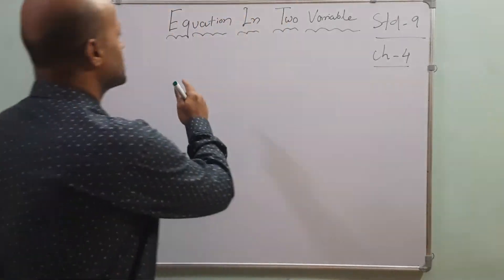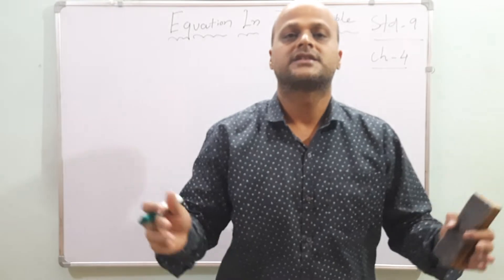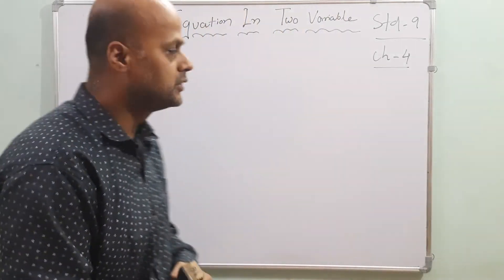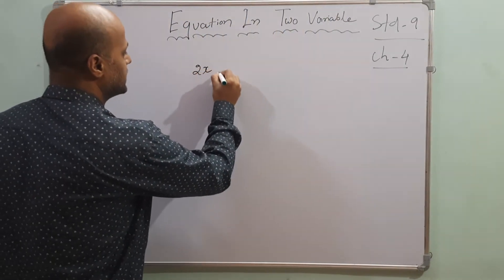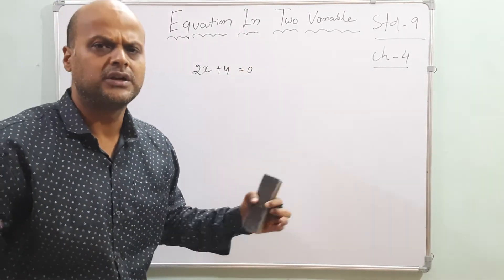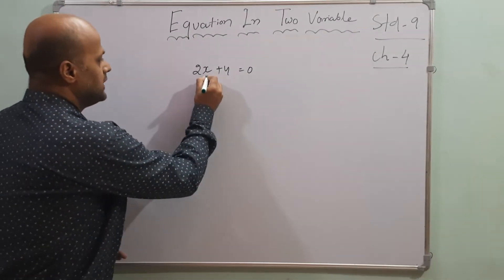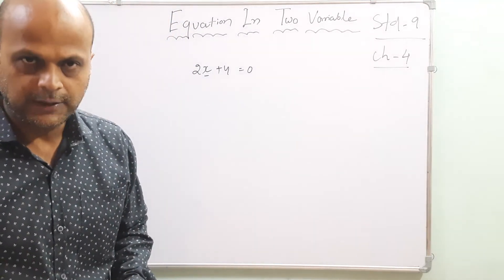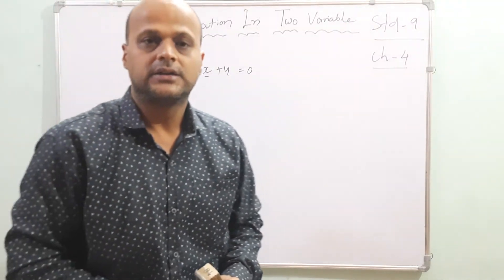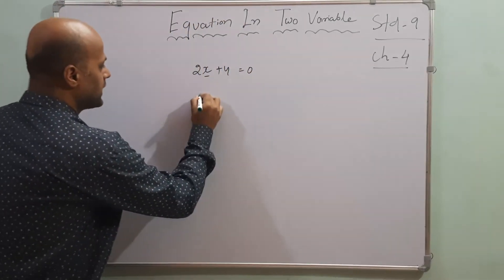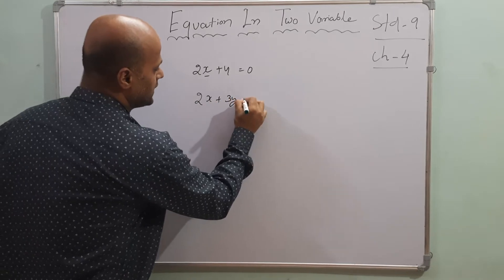In standard 8 we studied equations in one variable. For example, 2x plus 4 is equal to 0 — this is an equation in one variable, meaning only a single alphabet (variable) is present. Here, in equation in two variables, there must be two variables — two alphabets. For example, 2x plus 3y is equal to 0.